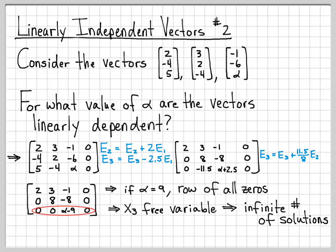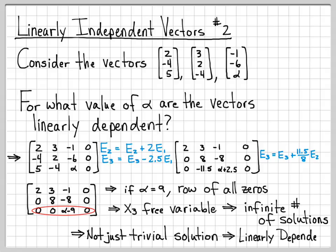And that means that I'm going to have this infinite number of solutions to my systems of equations, not just a trivial solution. If I got just a trivial solution, then the vectors would be linearly independent. I have found the value of alpha that gives me an infinite number of solutions. So that means I can make these vectors be dependent. So since I have not just a trivial solution, this means that the vectors are linearly dependent.